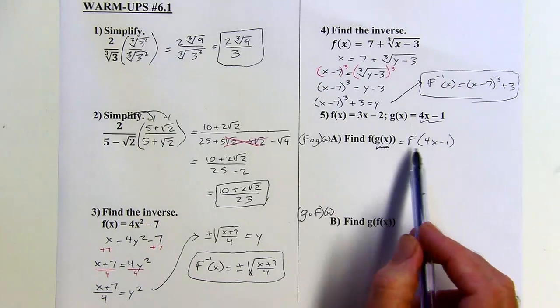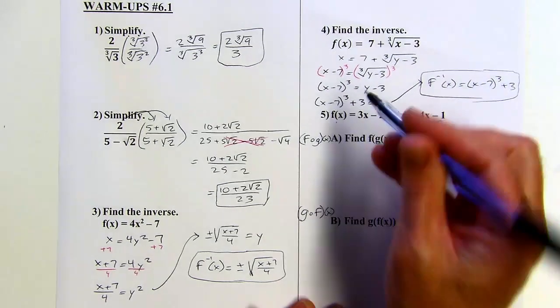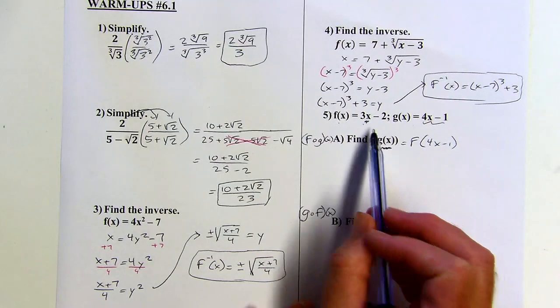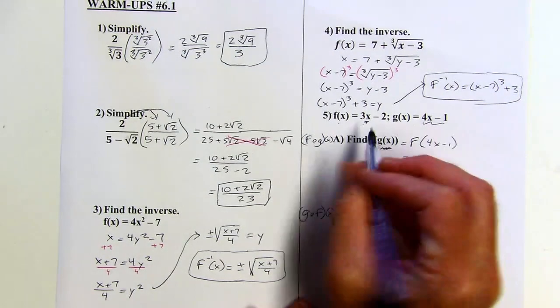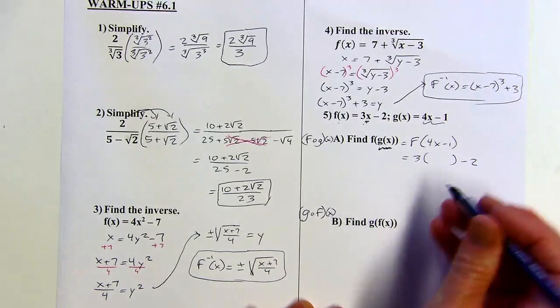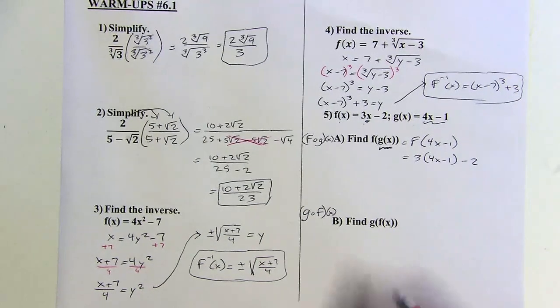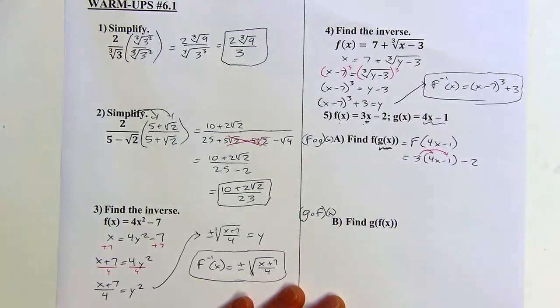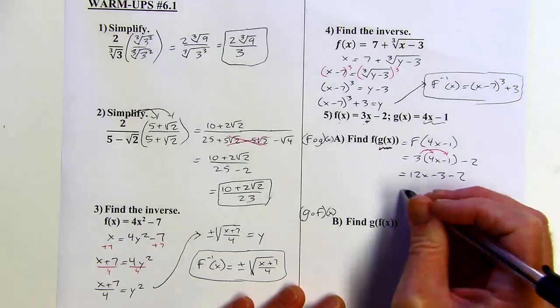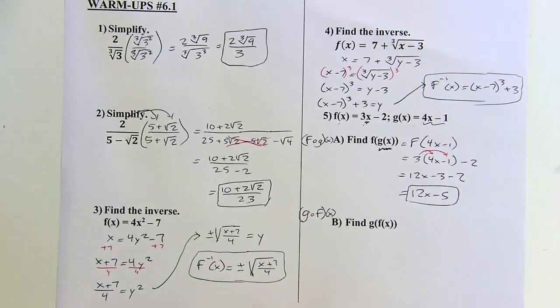And then the next step, I want to input 4x minus 1 into function f. So I'm looking at function f. The input is where the x is. So I'm going to be replacing that x with the quantity 4x minus 1. So this is going to be 3 times something minus 2. 3 times something minus 2. And my something is going to be 4x minus 1. And then I'm going to simplify this a little bit more by distributing and combining like terms. So that gives me 12x minus 3 minus 2. And that means 12x minus 5.